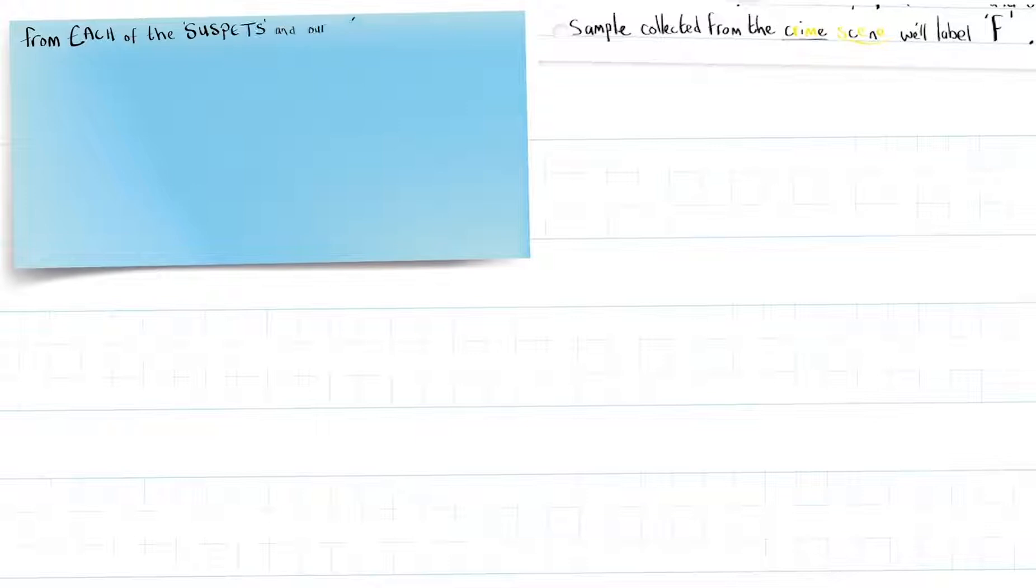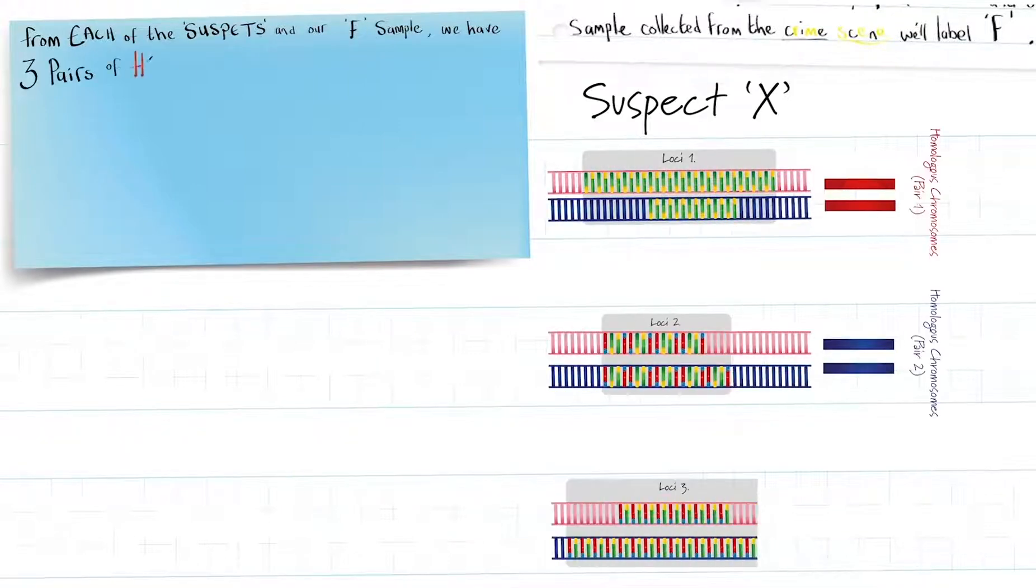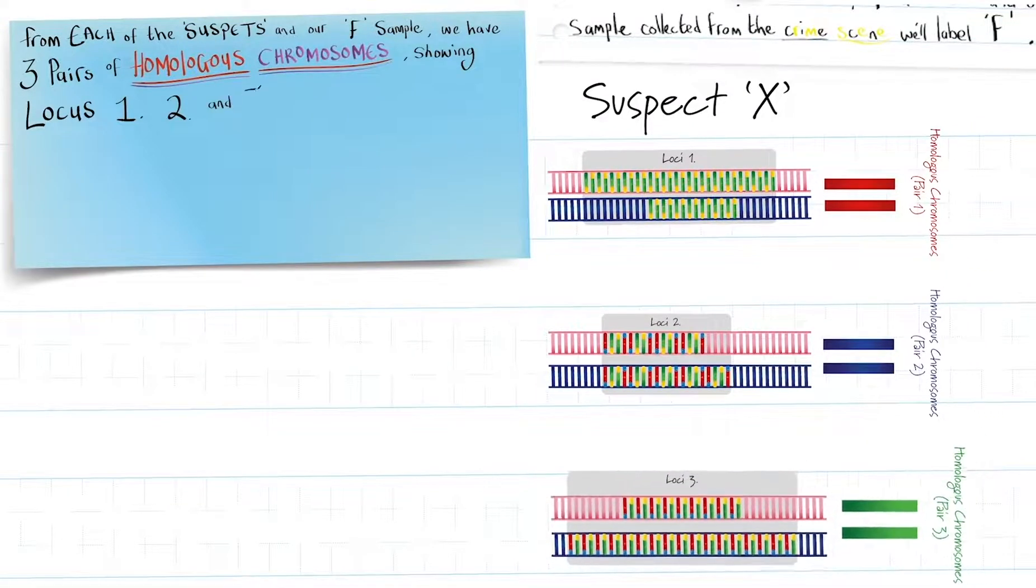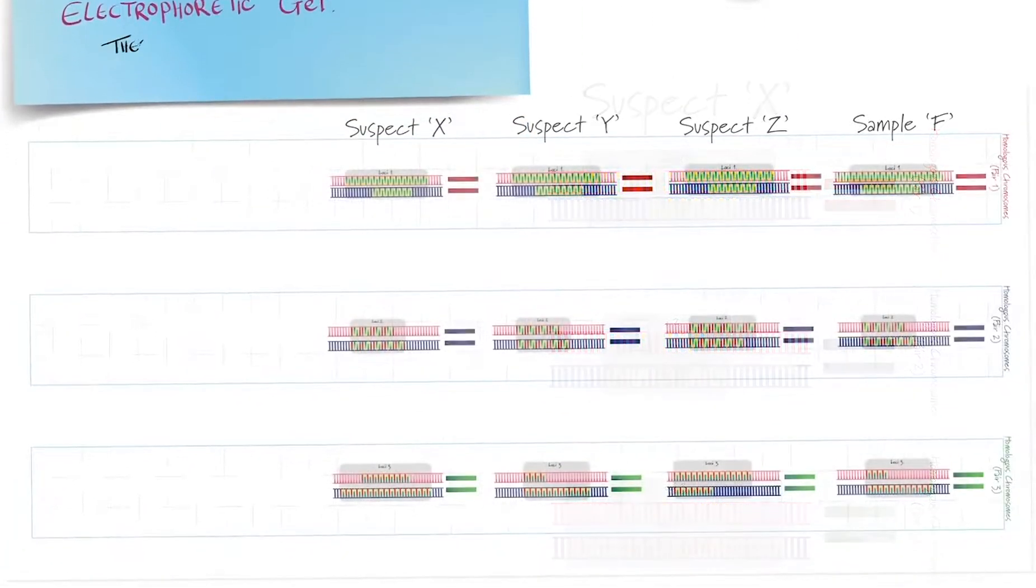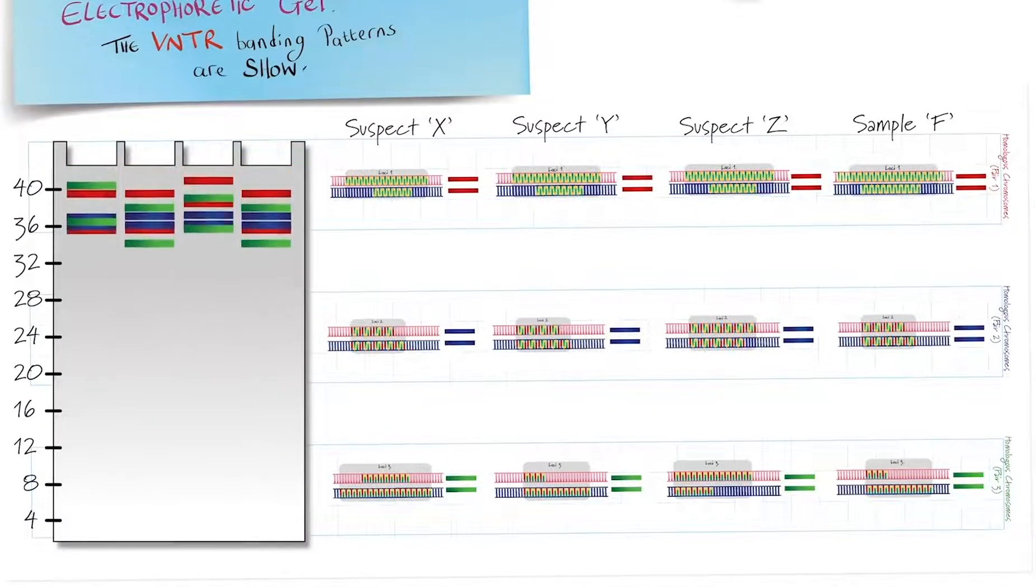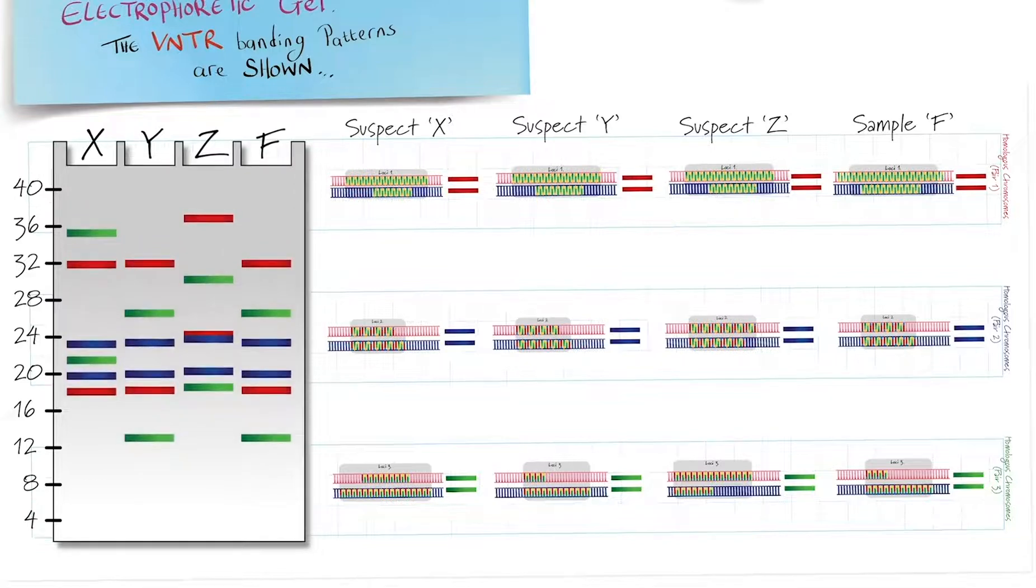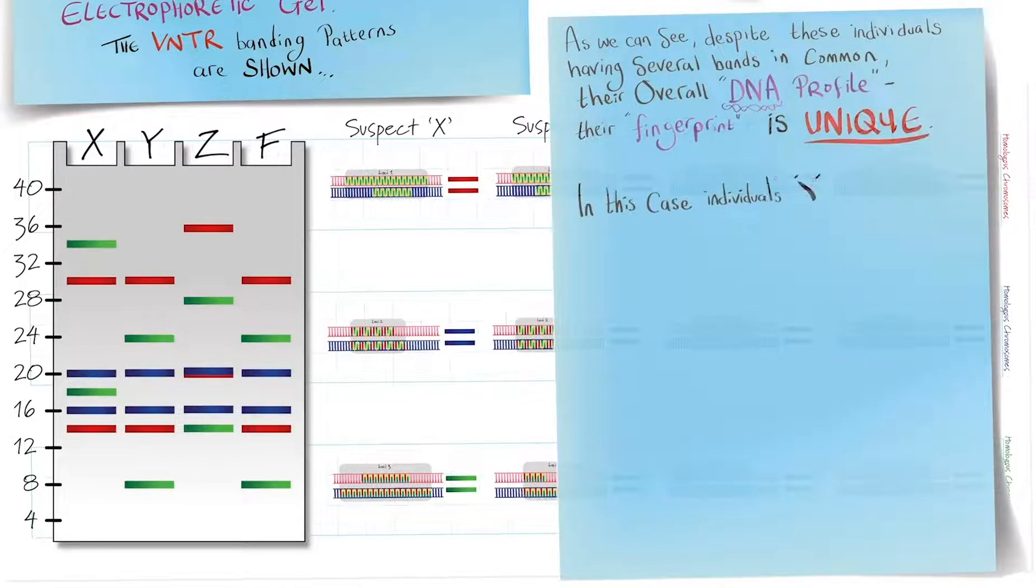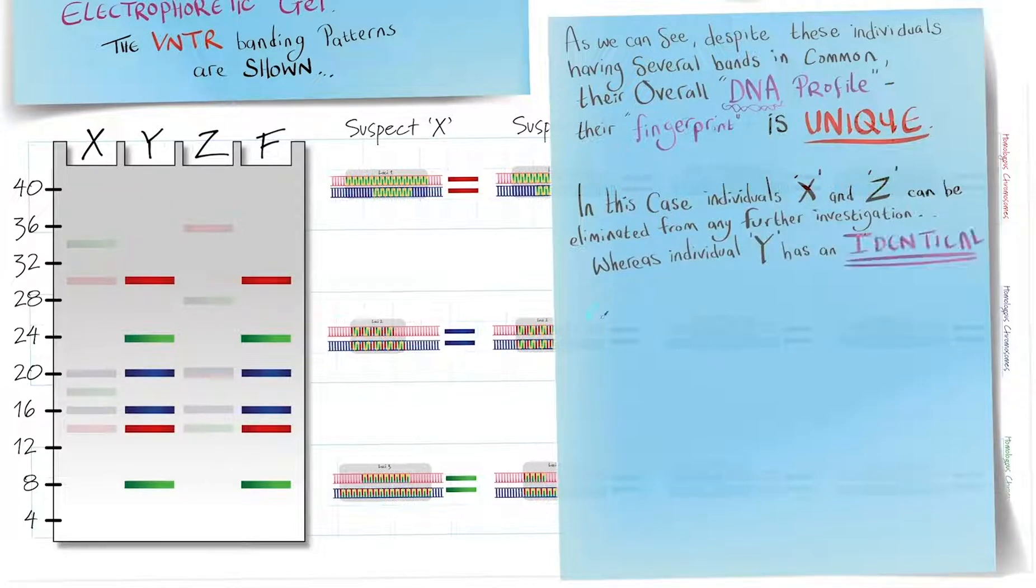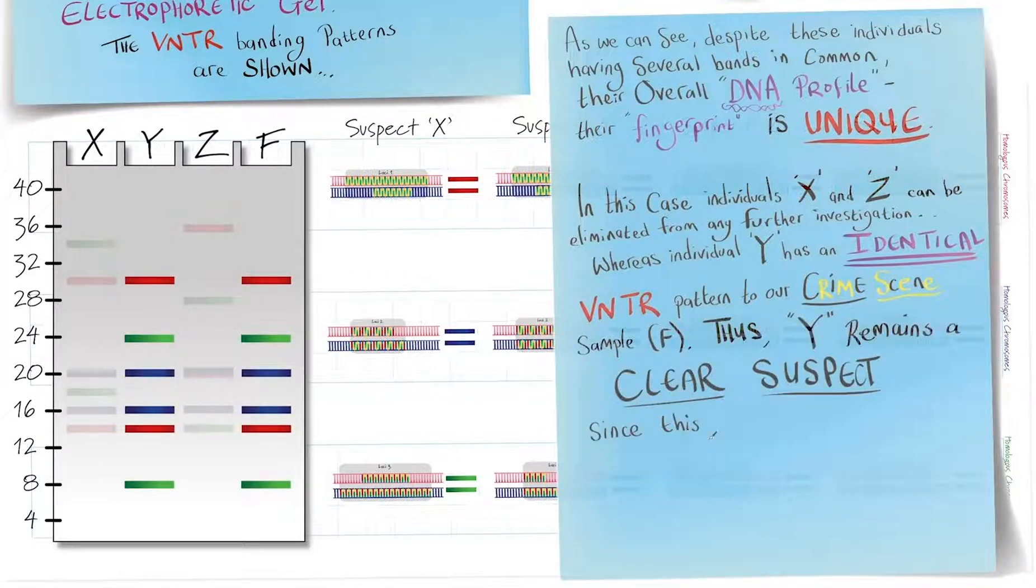From each of the suspects and our F sample, we have three pairs of homologous chromosomes, showing locus 1, 2, and 3. The VNTRs are amplified by PCR, and are then run through an electrophoretic gel. And here we have the VNTR banding pattern shown for suspect X, Y, and Z, and our sample F. As we can see, despite these individuals having several bands in common, their overall DNA profile, their fingerprint, is unique. In this case, individuals X and Z can be eliminated from any further investigation, whereas individual Y has an identical VNTR pattern to our crime scene sample, F. Thus, Y remains a clear suspect, since this technique provides the DNA evidence required to place Y at the scene of the crime.